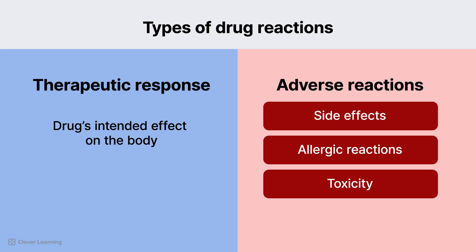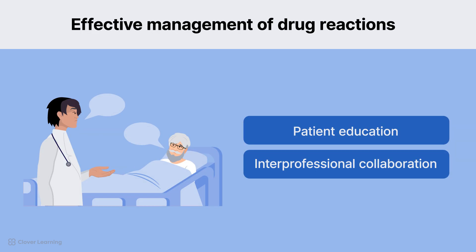In summary, understanding the types of drug reactions, their signs and symptoms, and strategies for managing them is critical for providing safe and effective care. The types of drug reactions are the therapeutic response and adverse reactions. The therapeutic response is the drug's intended effect on the body. Adverse reactions are a drug's unintended effects and include side effects, allergic reactions, and toxicity. Remember, patient education and interprofessional collaboration are key components in the effective management of drug reactions.